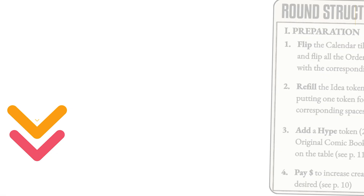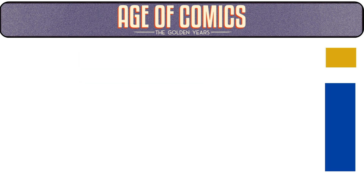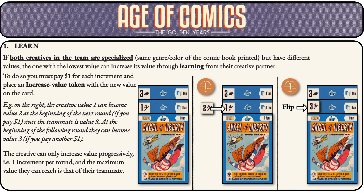Step four: pay money to increase creative values if desired. In economics, the entrepreneur can invest in labor through training or learning — a positive production externality — as this improves the quality of human capital resources. If both creatives on a team are specialized but have different values, the one with the lowest value can increase through learning from their creative partner. You pay one dollar per increment and place an increased value token. For example, a value one creative can become value two at the beginning of the next round if you pay one dollar, since the teammate is value three. Creatives can only increase value progressively — one increment per round — up to the maximum value of their teammate.